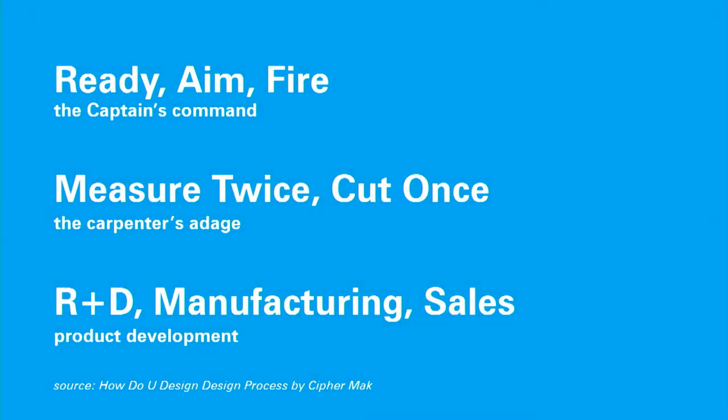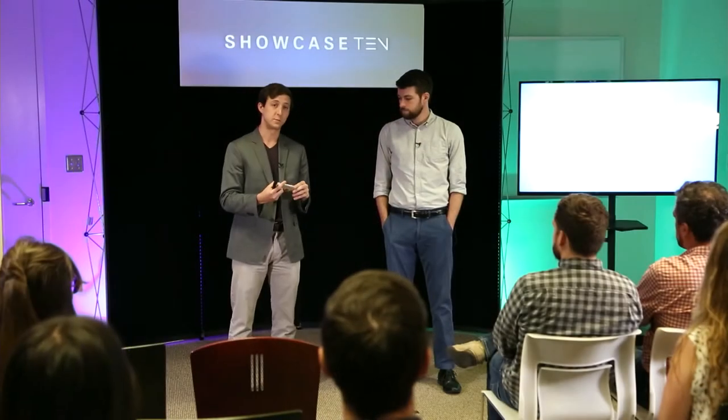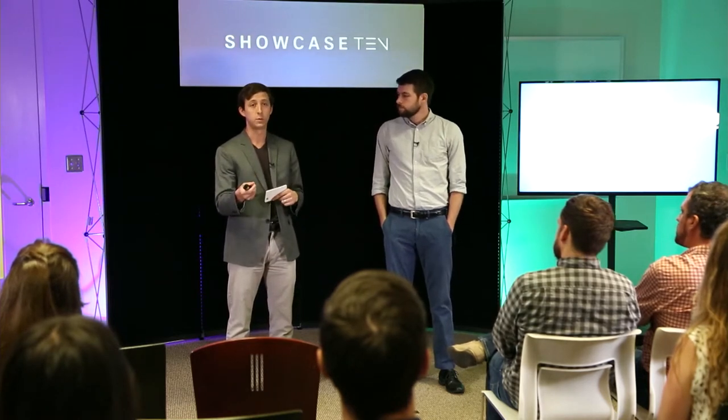Let's consider a few basic process models: the captain's command of 'ready, aim, fire,' the carpenter's adage of 'measure twice, cut once,' and the R&D, manufacturing, and sales components of product development. These are all examples of a sequence of steps aimed at a particular goal. They all deal with iteration and convergence, and they all hint at the ethos of a design process — which is really this: it's not so much what you're designing, but how you're going about designing that. We want to understand what we're doing so that we can improve it, with the goal of becoming better designers.